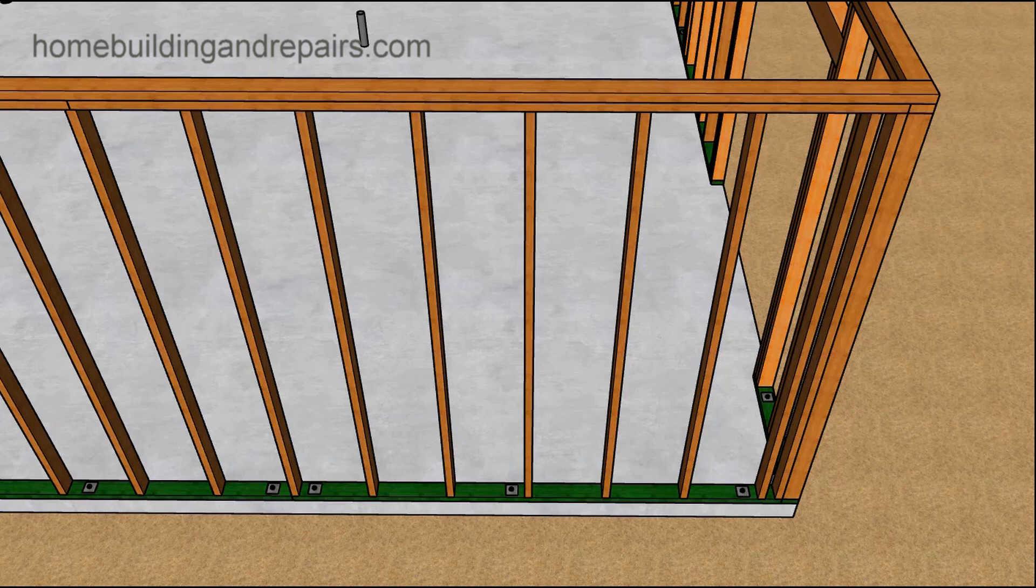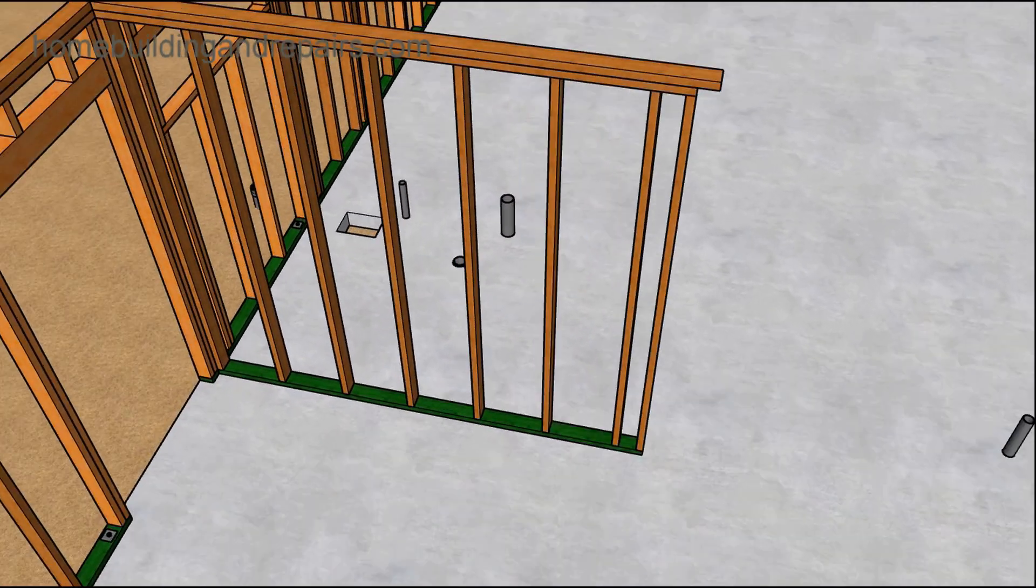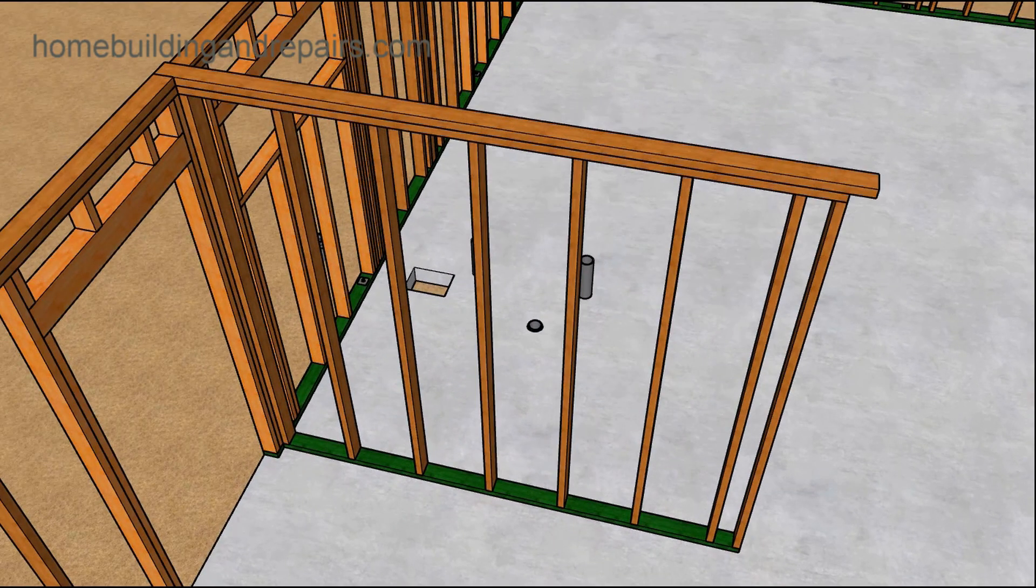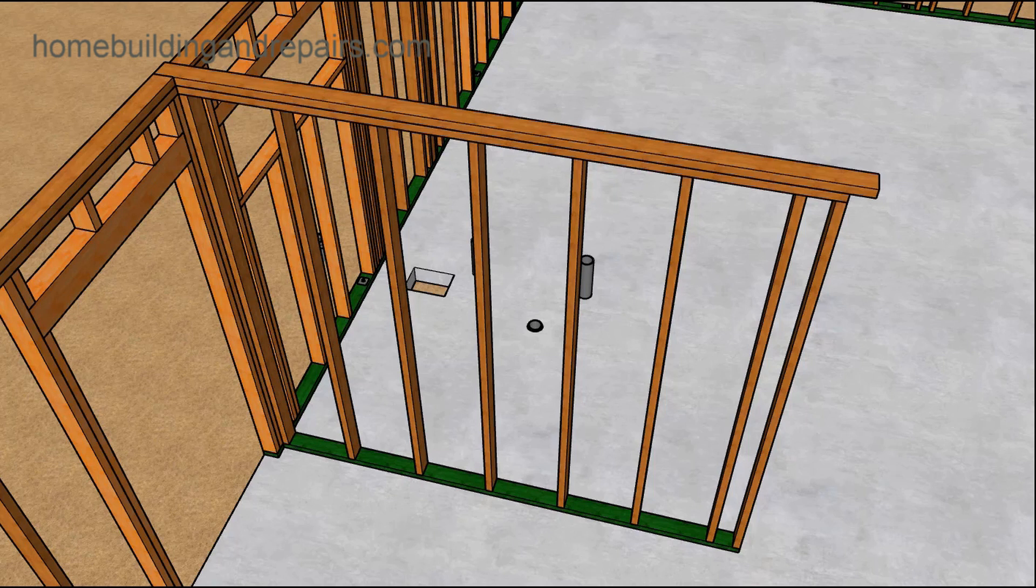Now in this video we are going to look at the interior wall framing. We'll just put one wall in at a time for our 850 square foot two bedroom single story house.